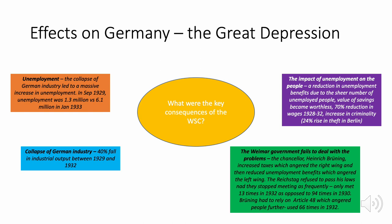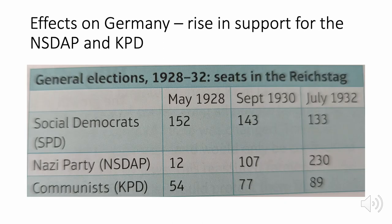All of this meant that Hitler and the NSDAP — the Nazi Party — along with the German Communist Party, saw a big improvement in their political performances. The SPD, the Weimar government, saw a decline in seats. Hitler and the NSDAP saw an explosion in popularity — in May 1928 they had just 12 seats, yet by July 1932 they had 230. The communists also increased their share of the vote.